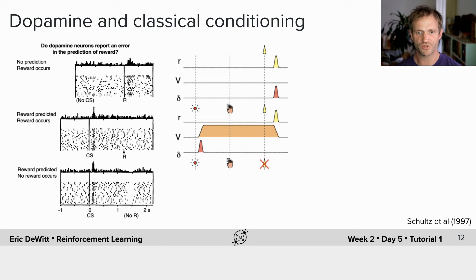Of course, if the reward is omitted, you still have the reward prediction error at the time of the CS, but you no longer have a reward, and so there's actually a negative reward prediction error at the time the reward was expected.